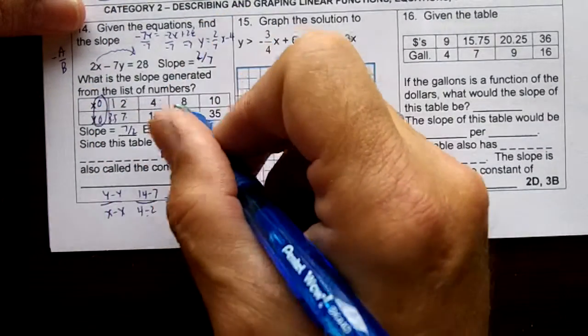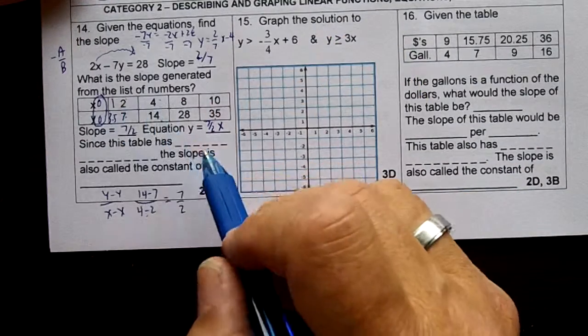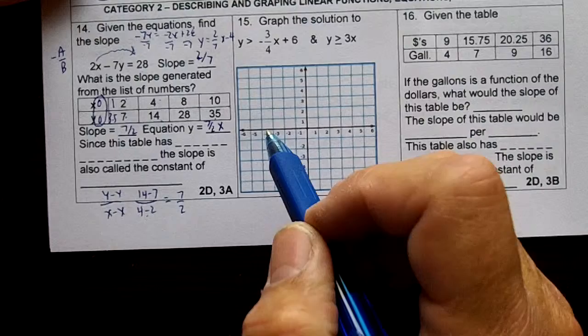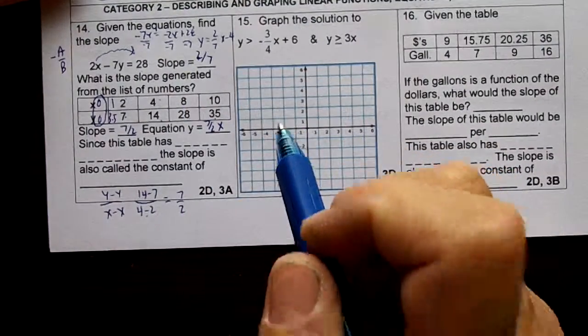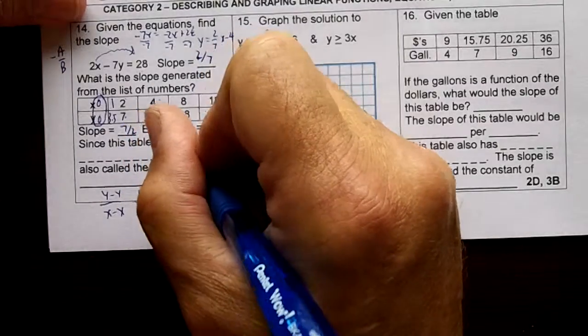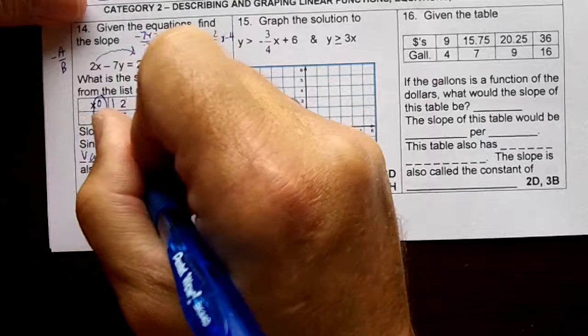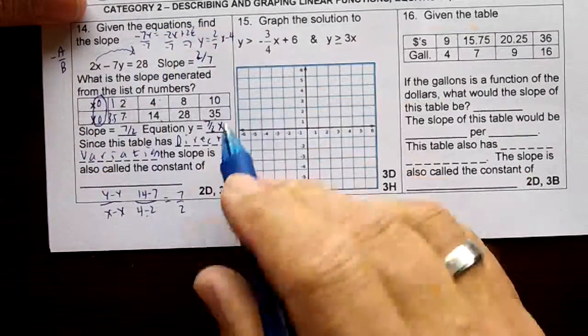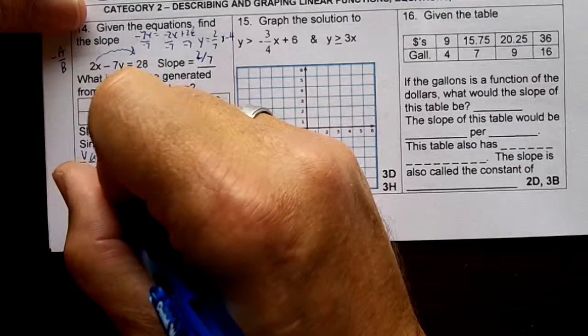What happens if you divide y by x every time? You get 3.5. 7 divided by 2 is 3 and a half. 14 divided by 4 is 3 and a half. 28 divided by 8 is 3 and a half. And 35 divided by 10 is 3 and a half. This table has direct variation. If the table has direct variation, the slope is also called the constant of variation.